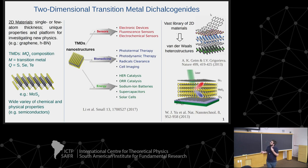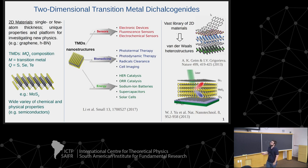One of the most important properties of transition metal dichalcogenides in the context of two-dimensional materials is that, contrary to graphene, they are natural semiconductors. That's the main feature attracting a lot of attention. With that comes a wide variety of properties motivating potential applications in two-dimensional TMD nanostructures, going from sensing to energy applications to biomedicine applications.